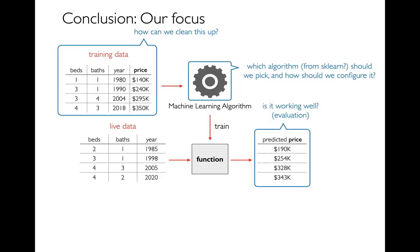Some of the questions we'll be interested in going forward: which algorithm should we use in Scikit-learn and how should we pick it? How should we configure it — a lot of these have different parameters. In terms of the data, how can we clean it up so it works well with the machine learning algorithm we chose? And when we use this thing, we'll get predictions we can compare to originals — how do we want to score that? There's not necessarily one right way to evaluate how good or bad it is.